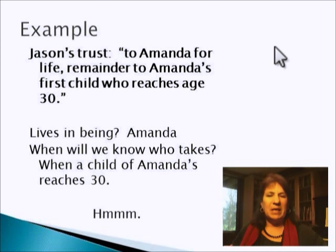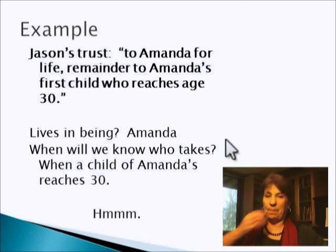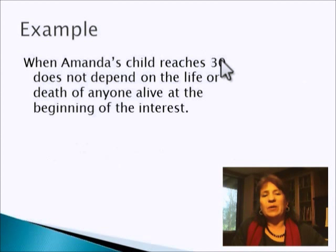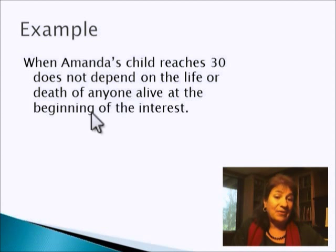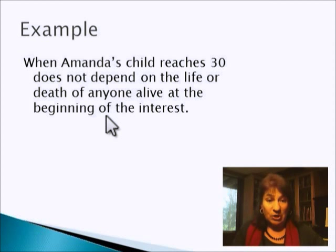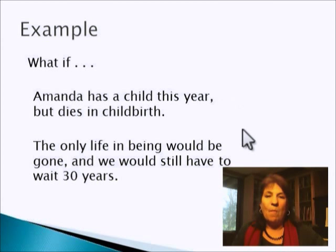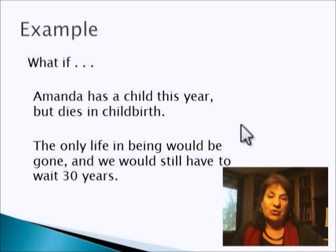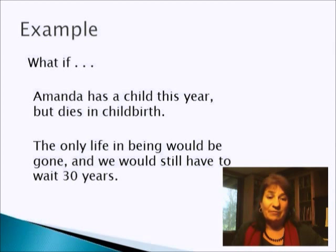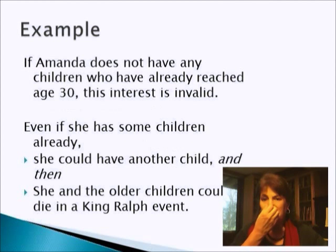Who are the lives in being? Well, Amanda. When will we know who takes? Whenever it is that a child of Amanda's reaches 30. When Amanda's child reaches 30, that doesn't really depend on the life or death of anyone alive at the beginning of the interest. Amanda's job is only to produce the children, give them a good start, but whether they make it to 30 or not doesn't have to do with her being alive or dead. What if Amanda has a child this year, and then dies in childbirth? We would have the situation where the only life in being, which was Amanda, is gone, and we're still going to have to wait 30 years. If we're focusing on the life, the life part is over, our grace period is only 21 years. So that was invalid.